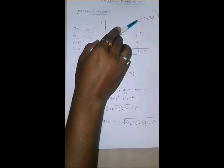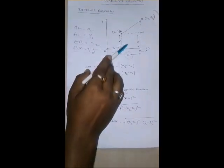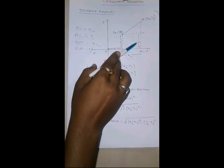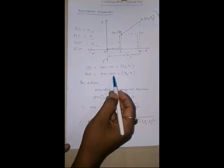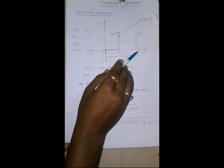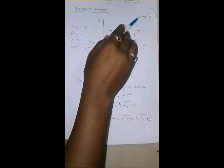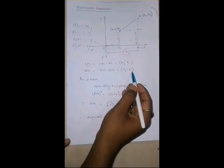Similarly, what is the value of BN? As you can see from B to M, it is y2, and from M to N, it is y1. So, BN will be BM minus MN. That is, from BM if I will subtract MN, I will get BN. That is y2 minus y1.